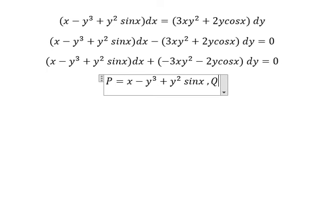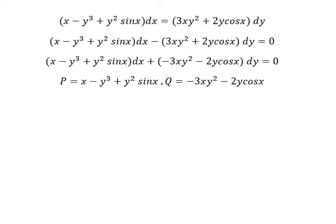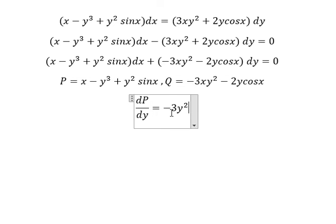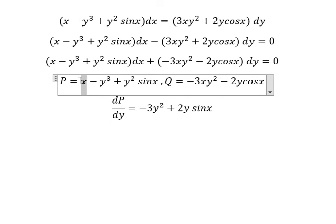And Q equals to this expression. We have the x term, which means we need to take the first derivative of P with respect to Y. We have Y terms here: the first derivative of Y to the power of 3 gives negative 3Y squared, and the first derivative of Y squared gives 2Y. We have sin(x) with no Y, so its derivative is 0.